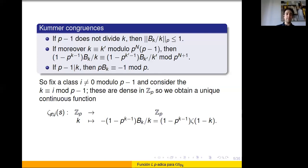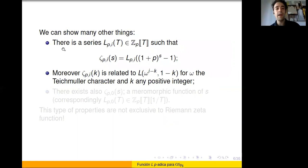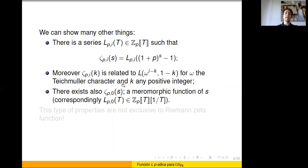Even better, this function is analytic in the sense that there is a formal power series L_p(t) such that I can recover this continuous function by substituting t with the expression (1 + p)^s - 1. At integers not congruent to i modulo p minus 1, I get not really the Riemann zeta function but the values of the Dirichlet L-function associated to the Teichmüller character of order p minus 1. For the class congruent to 0, one defines a meromorphic function with a pole at t equals 0, corresponding to s equals 0, exactly like the classical Riemann zeta function.